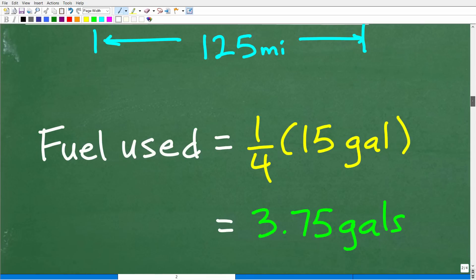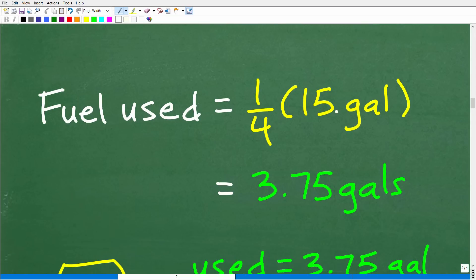One-fourth times 15 gallons. Let's go ahead and do that right now. So the fuel used here is going to be one-fourth of this 15 gallons. So we're going to just take that one-fourth and multiply it by 15. And when you do that, it's going to be 3.75 gallons.